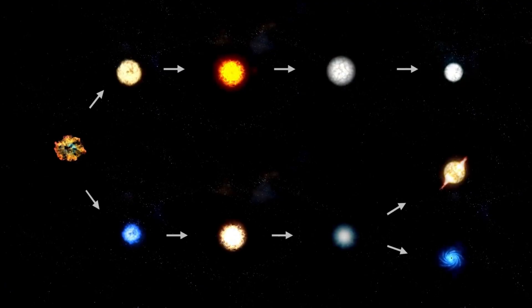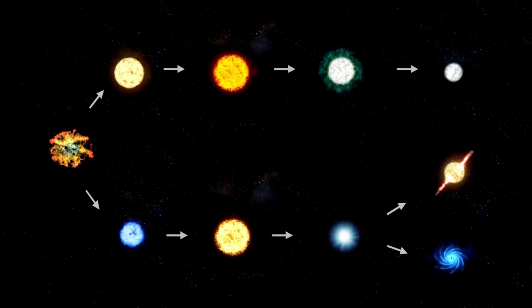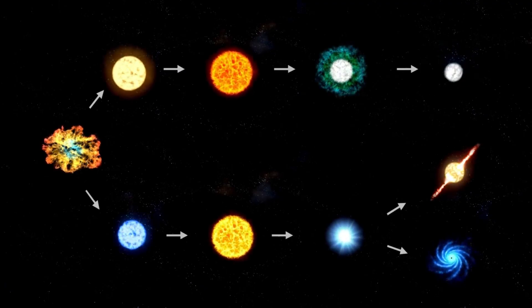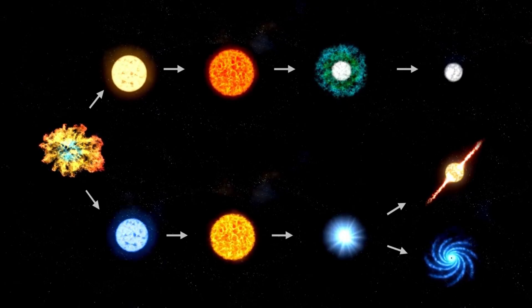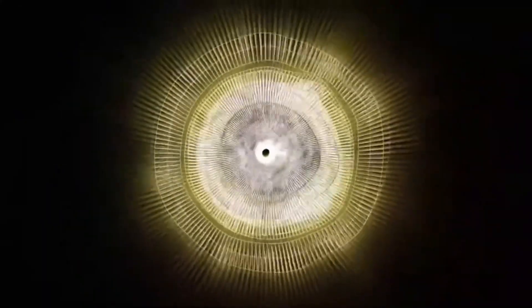The fact that a planet has DMS in its atmosphere is especially meaningful because, on Earth, DMS is a good biosignature. It's a chemical that nearly exclusively comes from life. To have even a whisper of it so far from home is nothing short of remarkable.